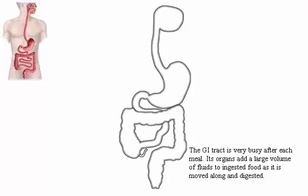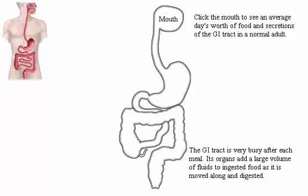The GI tract is very busy after each meal. Its organs add a large volume of fluids to ingested food as it is moved along and digested. Click the mouth to see an average day's worth of food and secretions of the GI tract in a normal adult.